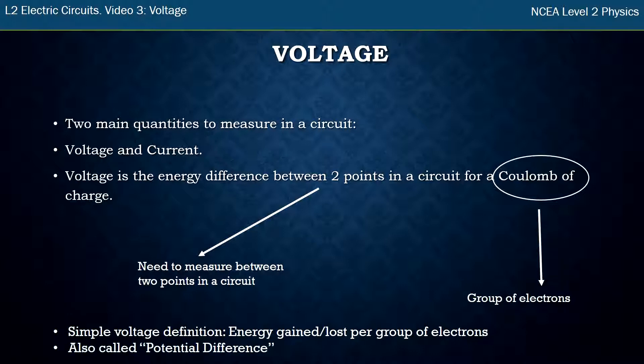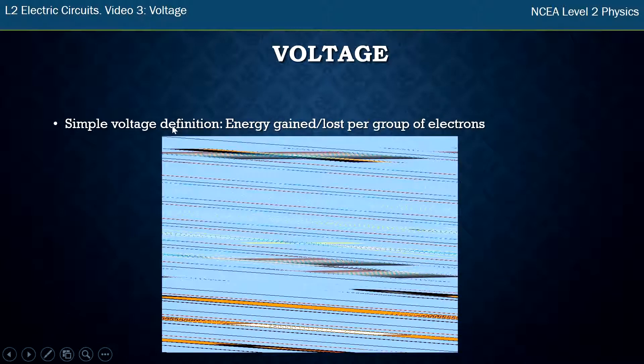The other name that you'll see for voltage is potential difference. Now that comes from the fact that we're measuring between two points, the energy difference between two points. So this first page has a lot of definitions here. It'll make sense once we have a look at some circuits and measure some voltages for those. Alright, so remember our simple definition is energy gained or loss per group of electrons.